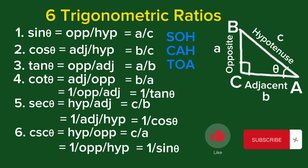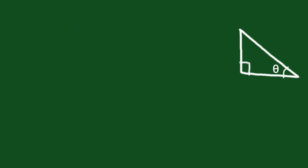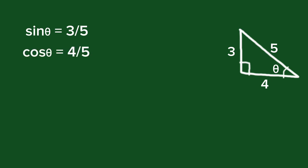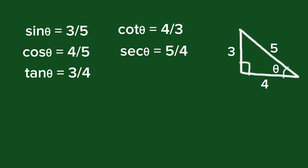Let's have examples. Given a triangle with angle theta where the hypotenuse is 5, the opposite side is 3, and the adjacent side is 4: sine theta is 3 over 5, cosine theta is 4 over 5, tangent theta is 3 over 4, cotangent theta is 4 over 3, secant theta is 5 over 4, and cosecant theta is 5 over 3.